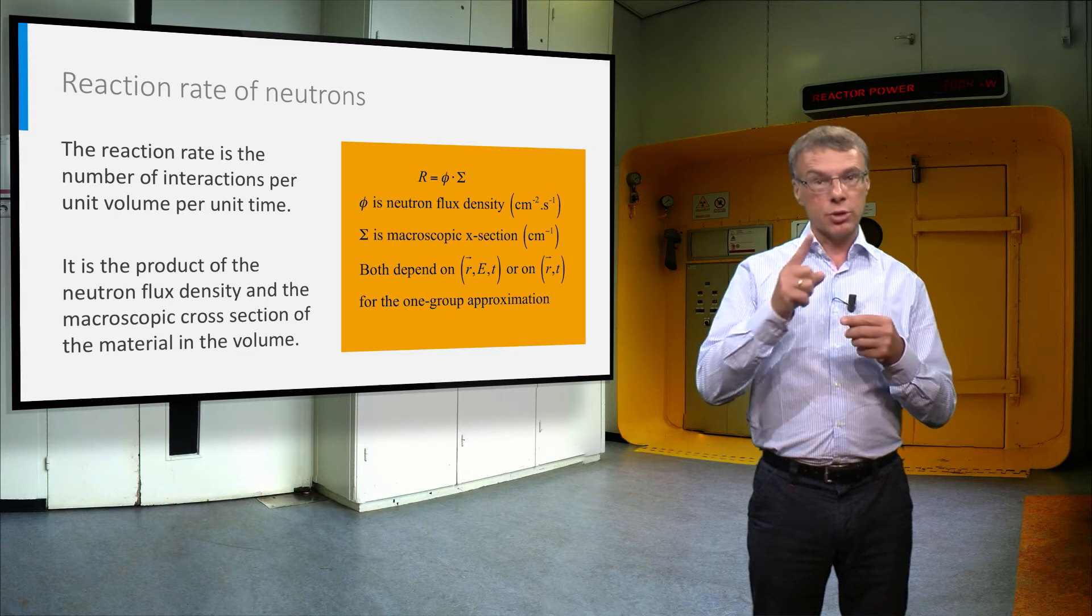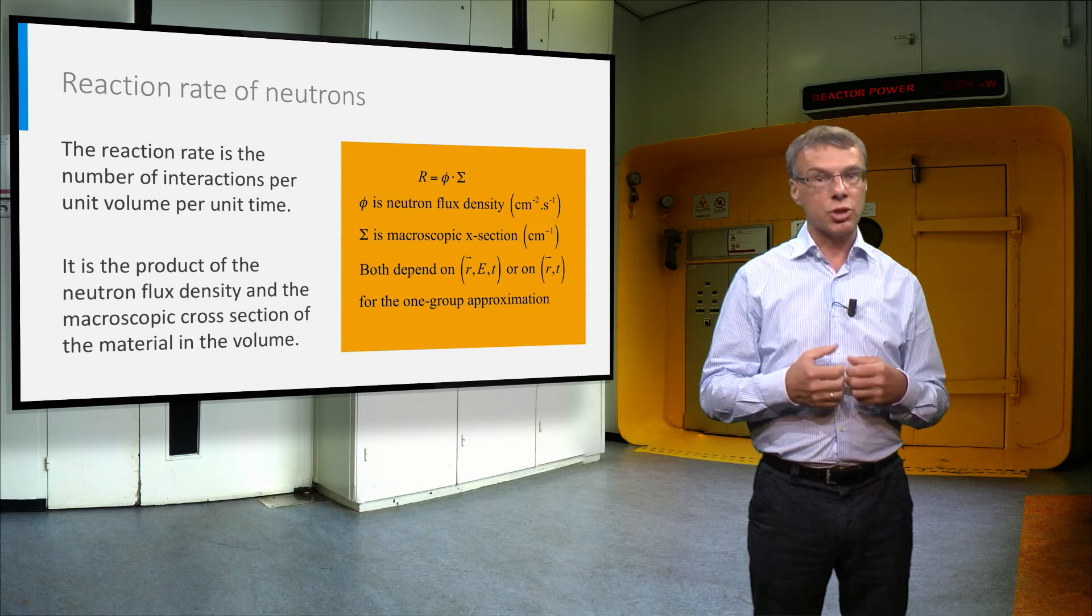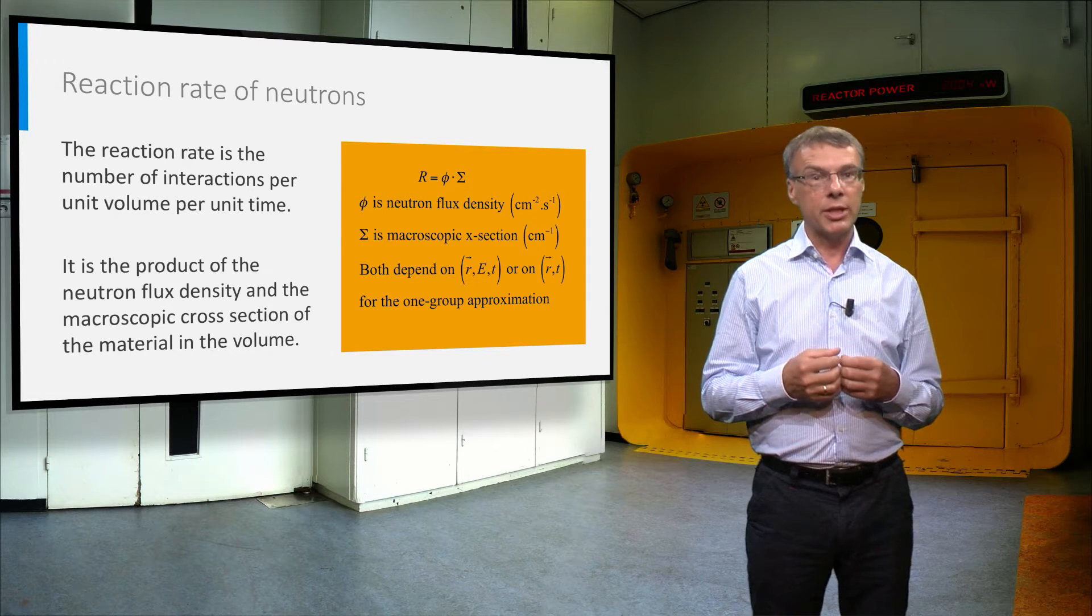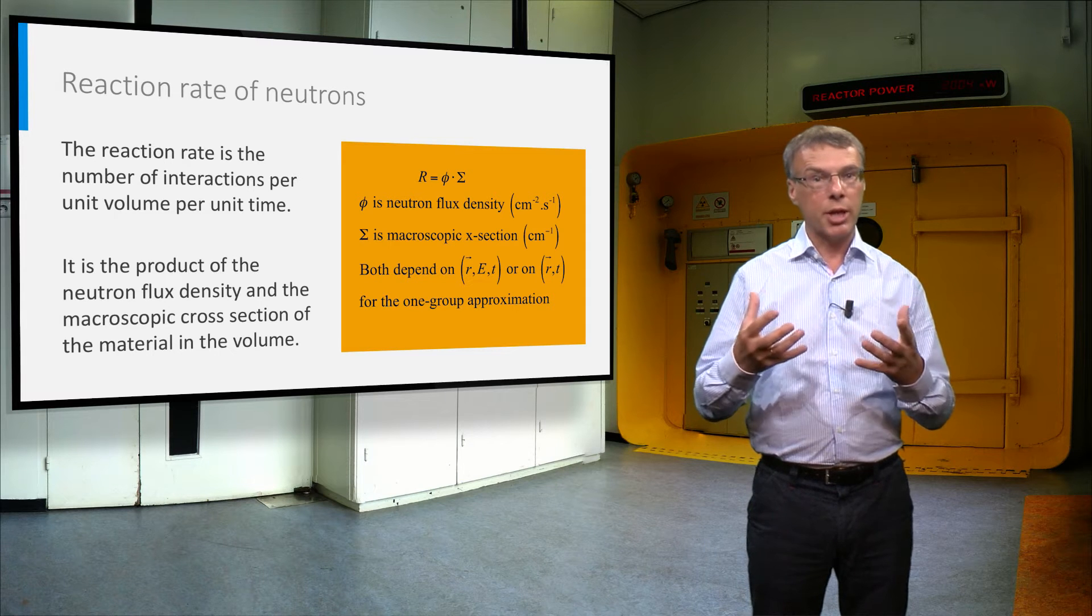Because the neutron flux depends on space, energy and time, and because the macroscopic cross section typically also depends on space and energy, the reaction rate density is also depending on these parameters.